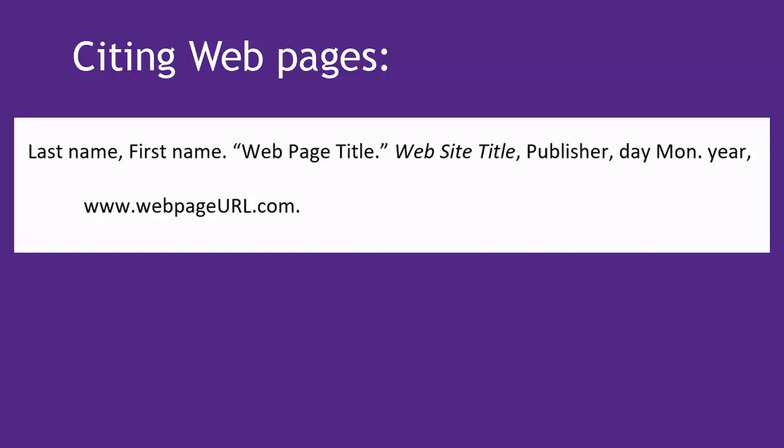When citing a web page, you need to use the following information: the name of the author, title of the web page in quotes, title of the website in italics, publisher if there is one, and date of last update written as day, month, year — or minus the day and/or month if you don't have that. For the access information, you include either the DOI or the web page URL, removing the https:// part. The DOI, which stands for Digital Object Identifier, is most common for journal articles, so if you see something with a DOI, watch our MLA video for articles instead, as it's much more relevant.